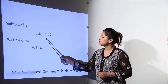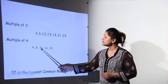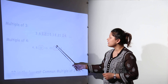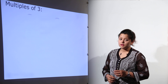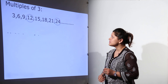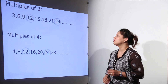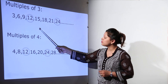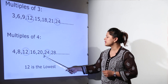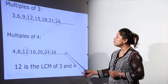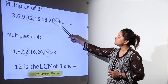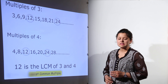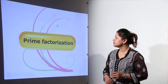We write multiples of 3 and multiples of 4. Here 12 and 24 are common to both, but 12 is the smallest one. We can call it the lowest common multiple of 3 and 4. That is why 12 is known as the LCM of the two numbers.